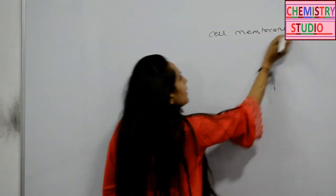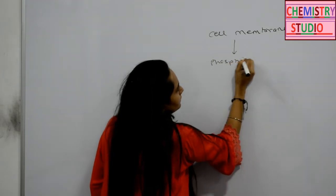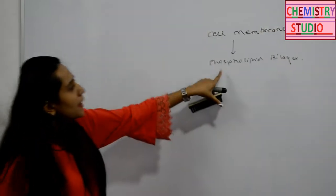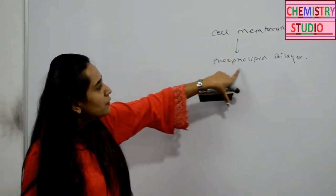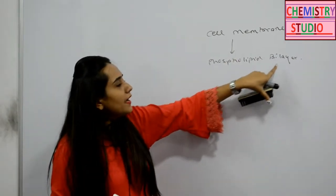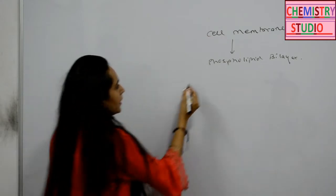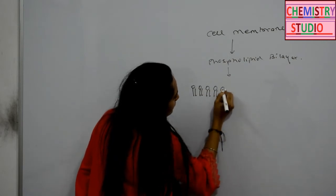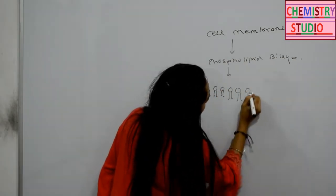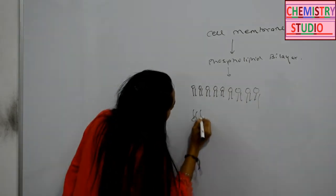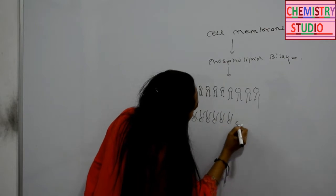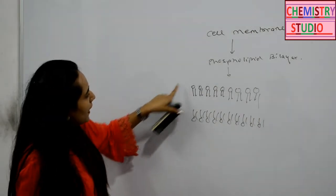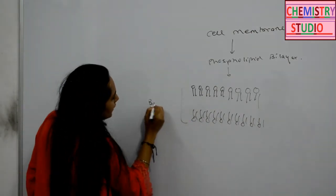The cell membrane is a phospholipid bilayer. Phospholipid bilayer — 'phospho' means there is the presence of a phosphate group and then there is a lipid moiety. It is called a bilayer because there are two such layers present.